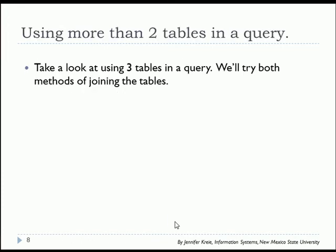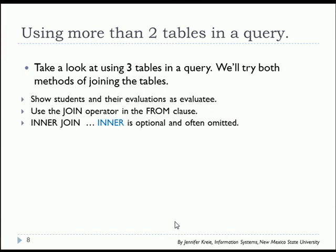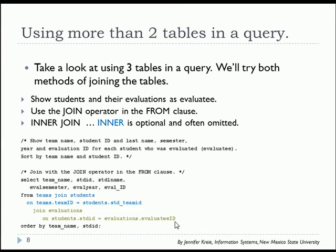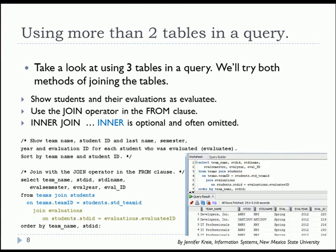Let's look at using more than two tables in a query. Let's show information about students and their evaluations as an evaluatee. We'll use the inner join. In the from clause we will first join teams to students. The on clause indicates the two columns that join those two tables and that's followed by the third table join evaluations on and the two columns that join the results of the first join with the third table. And this would be the result that we get.